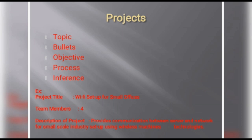Projects should include the topic, followed by bullet points covering: the objective of the project, the process you undertook, and the inference you drew. For engineers, include project title, team members, and description of the project. Use this as an example to validate and update your resume format.